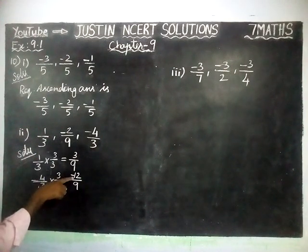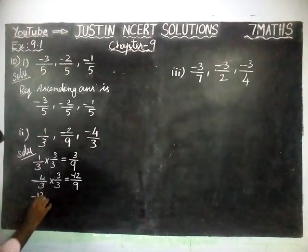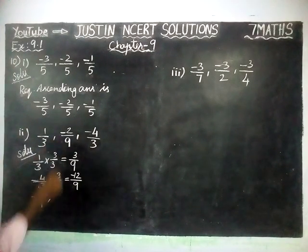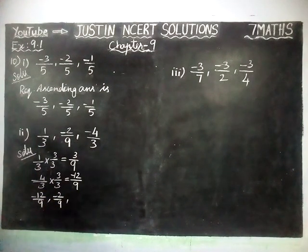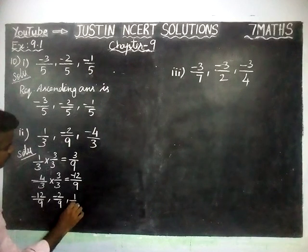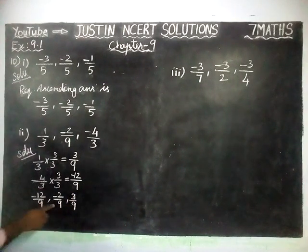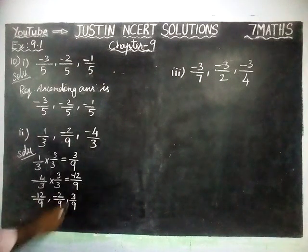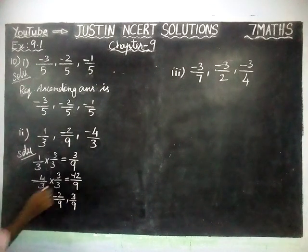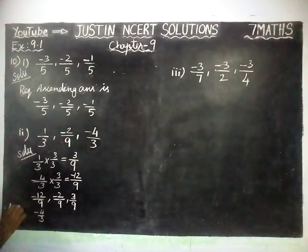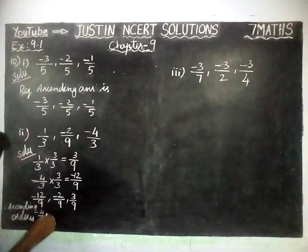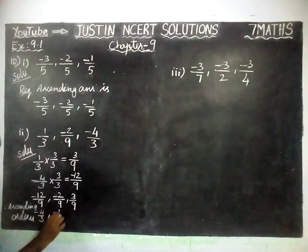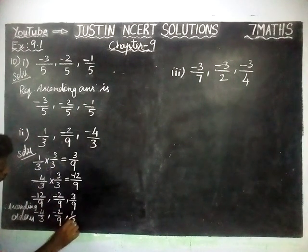Here, the smallest value is minus 12 by 9. The next smallest value is minus 2 by 9, and the next value is 3 by 9. According to the minus values, minus 12 by 9 comes first, then minus 2 by 9, then 3 by 9. Therefore, the ascending order is: minus 4 by 3 (which equals minus 12 by 9), then minus 2 by 9, then 1 by 3 (which equals 3 by 9).